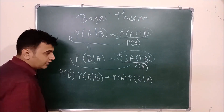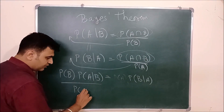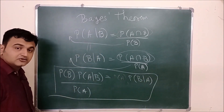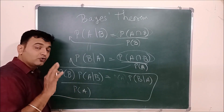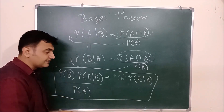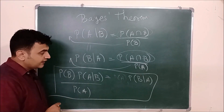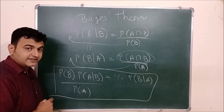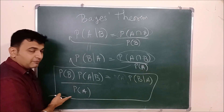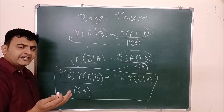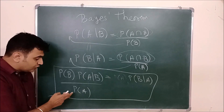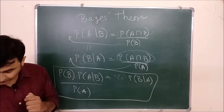Rearranging, P(B|A) is given by that formula. So if you know P(A|B) and want to find P(B|A) — the reverse or inverse probability — we use this formula. This is the main aim of Bayes' theorem. Given P(A|B), P(B), and P(A), we can find P(B|A). But many times in a problem you may not directly know P(A), so here we apply the total probability theorem.